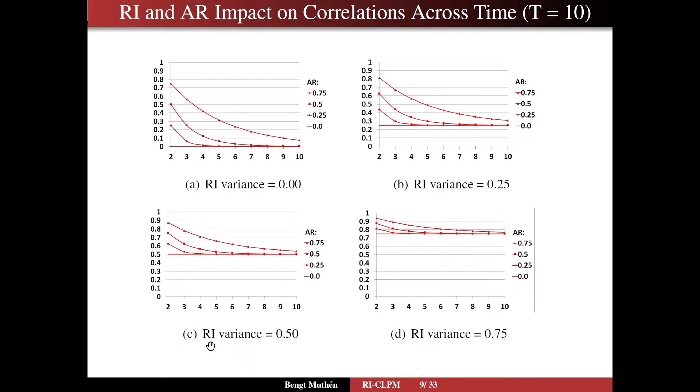Now if you have a higher random intercept variance, the floor gets pushed up. And very high random intercept variance, there's not much change across time in the correlations because they're high throughout.